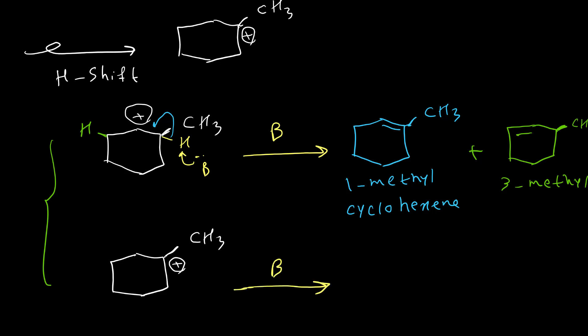For the tertiary carbocation, there are three different possibilities for removing hydrogen. But these two yellow hydrogens, they are equivalent, they are identical. So it produces only one type of product. We are also able to remove hydrogen from the methyl, so base can attack one of these hydrogens and produce the double bond outside of the cyclohexane ring. As you can see here, both of these carbocations can make 1-methylcyclohexene.